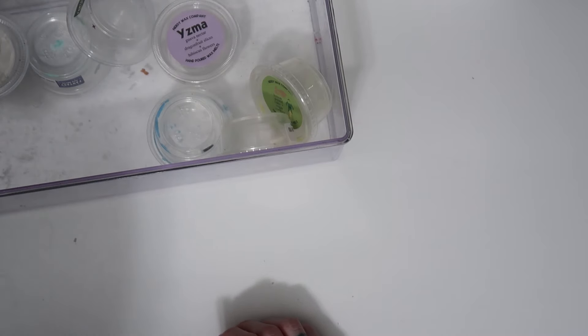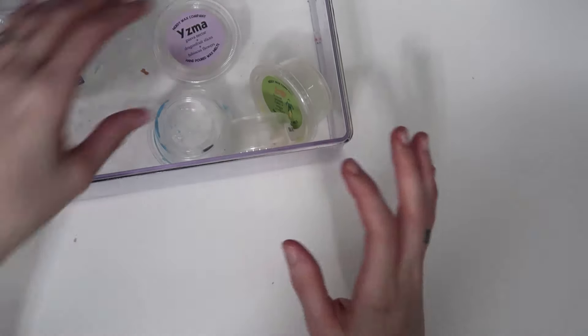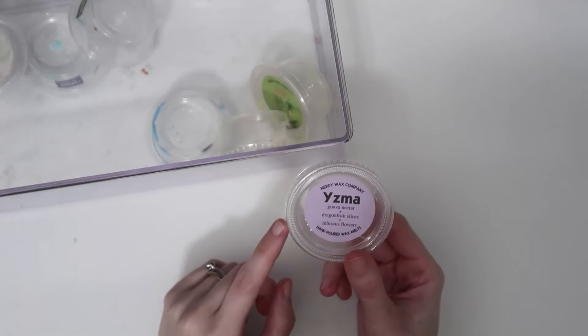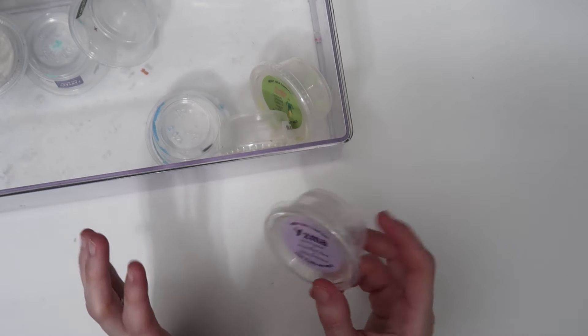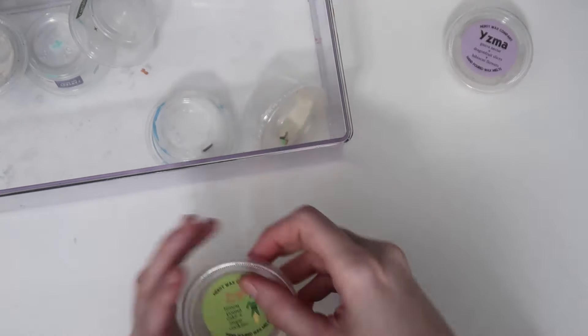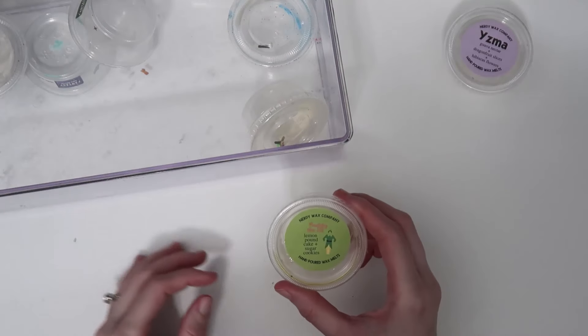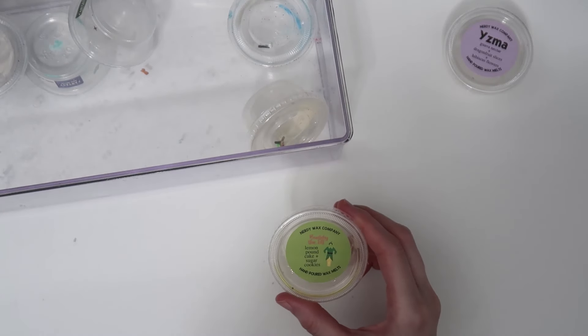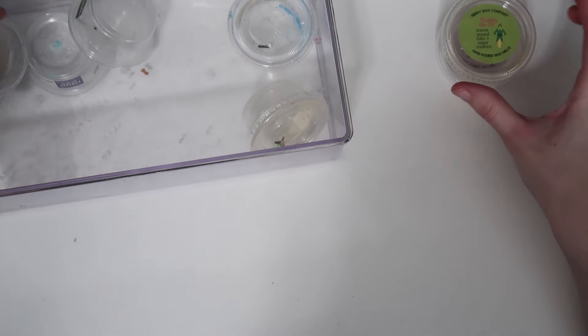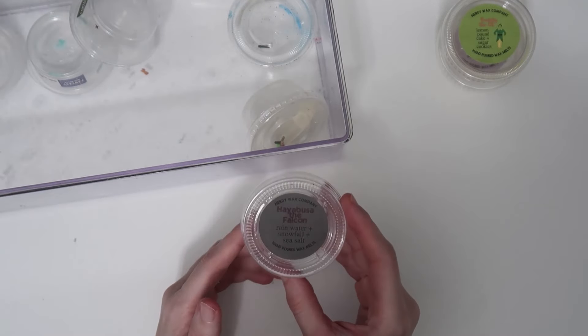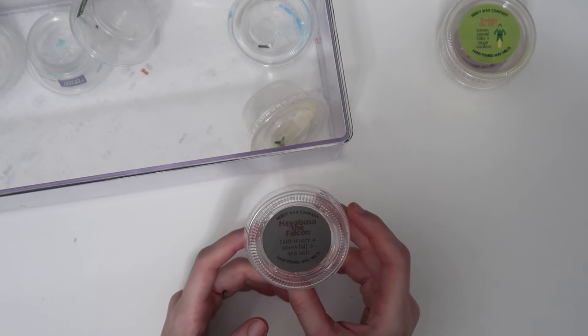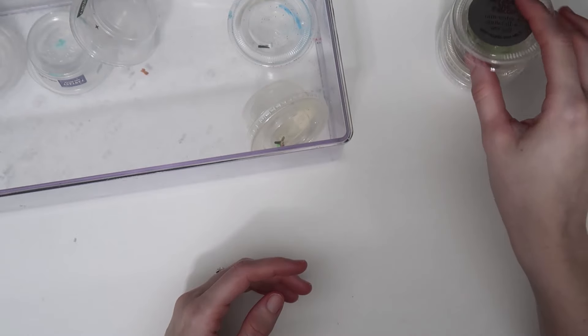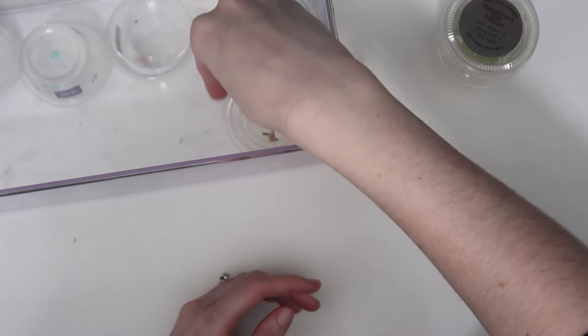Now into the shot cups. From Nerdy Wax Company we have Yzma - guava nectar, dragon fruit slices, and hibiscus flowers. This was wonderful, very fresh, very fruity. Another Nerdy Wax is Buddy the Elf - lemon pound cake and sugar cookies. This was very heavy on the lemon pound cake, really sweet. Another from Nerdy Wax - I cannot pronounce this - Hiabusa the Falcon Girl - rainwater, snowfall, and sea salt. This was fresh, really good. I actually melted this last night in our bedroom and really enjoyed that one.